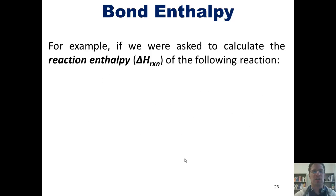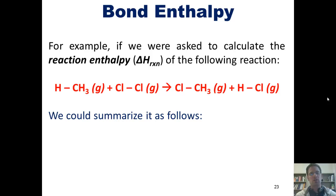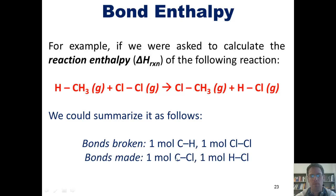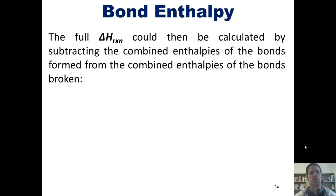For example, if we were asked to calculate the reaction enthalpy, which is often abbreviated as ΔH sub-Rxn for reaction, of the transformation shown here, we could summarize it as follows. In this transformation going from left to right, you'll notice that this hydrogen bonded to this carbon is ultimately being replaced with a chlorine bonded to the carbon, and this chlorine bonded to this chlorine is being replaced by a hydrogen bonded to a chlorine. We can thus say that going from left to right in this reaction, we break one mole of carbon-hydrogen single bonds and one mole of chlorine-chlorine bonds. As we go to the product side, we end up forming one mole of carbon-chlorine bonds and one mole of hydrogen-chlorine bonds. The full enthalpy of this reaction is then calculated by subtracting the combined enthalpies of the bonds formed from the combined enthalpies of the bonds broken, according to this equation.